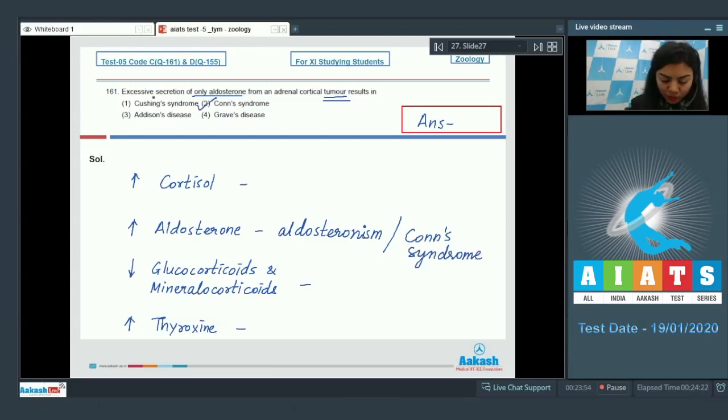Option number two, whereas Cushing syndrome is due to excessive secretion of cortisol from adrenal cortex. Excess cortisol would result in Cushing syndrome. Addison's disease, option number three, is due to deficiency of corticoids, both glucocorticoids and mineralocorticoids, when the cortex is destroyed and could be due to destruction of adrenal cortex or due to its malfunctioning. Option number four, Graves disease, is due to excess of thyroid hormone.